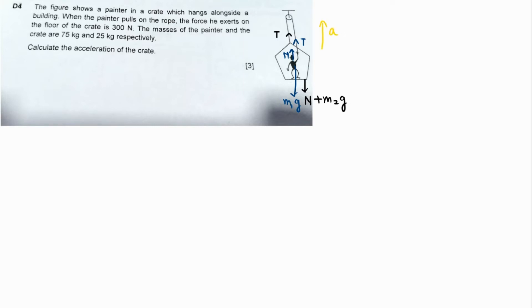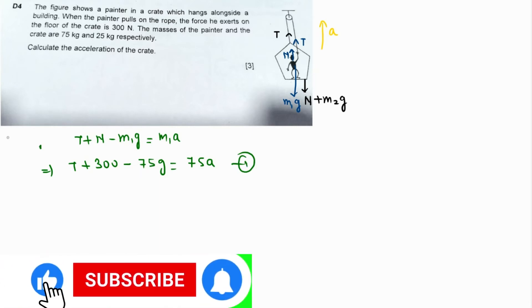For the painter: T plus normal reaction minus M1G equals M1A. The normal reaction is given as 300 newtons, so T plus 300 minus 75G equals 75A. Let's call this equation one.